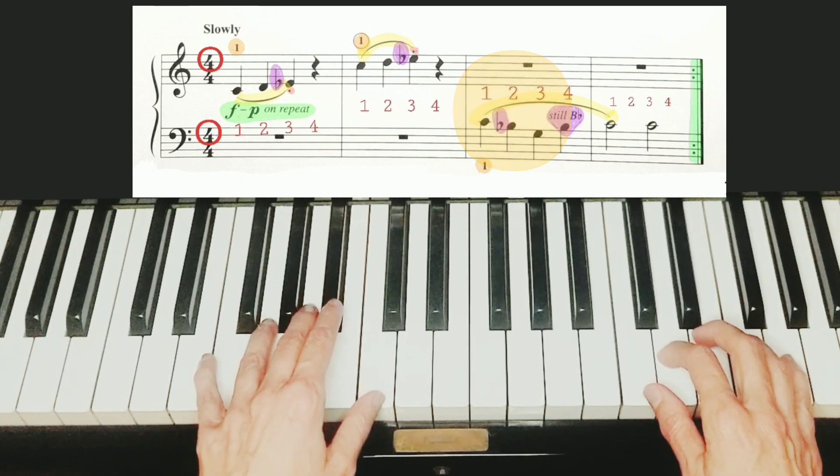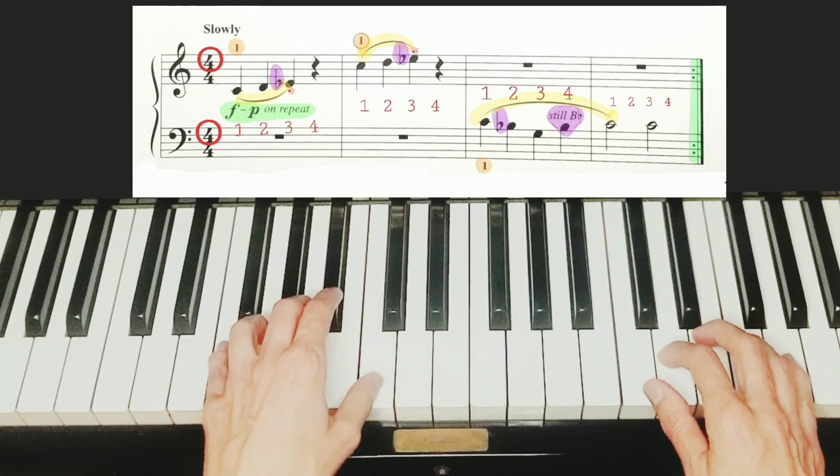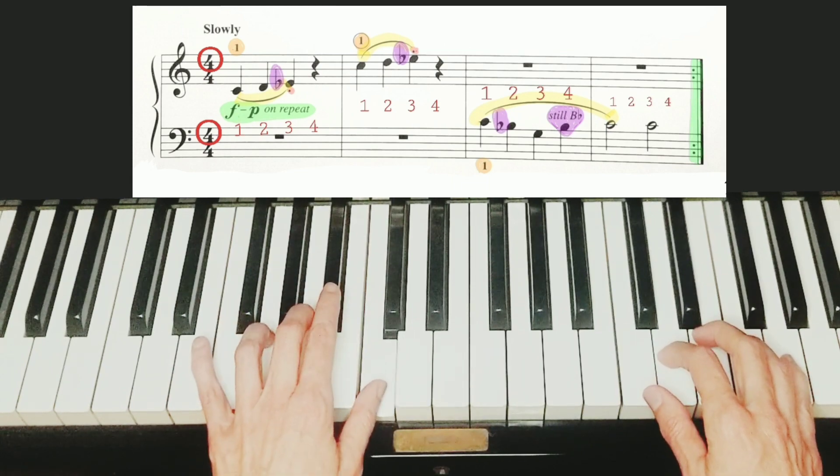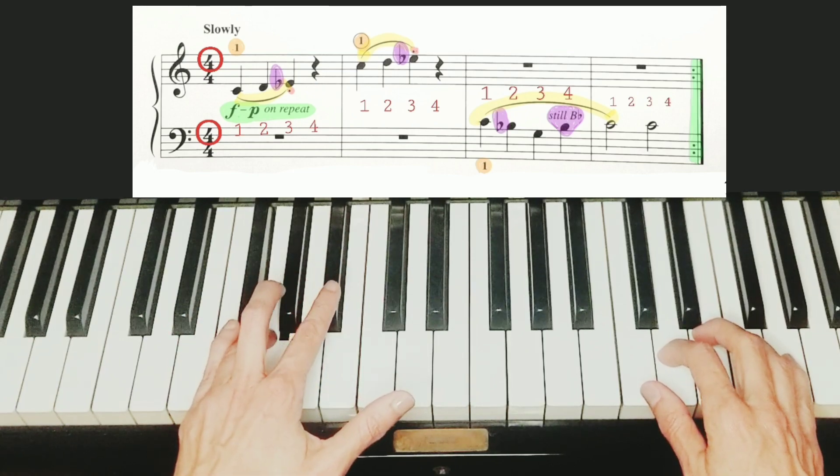On the third measure, make sure that you play G with finger 4. So you have C, B flat, G with finger 4, and again B.